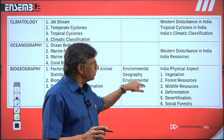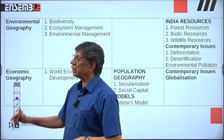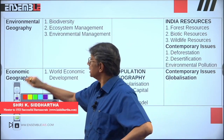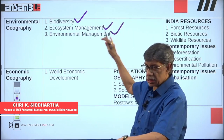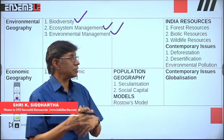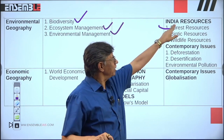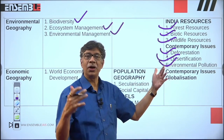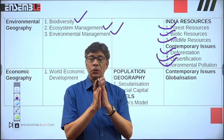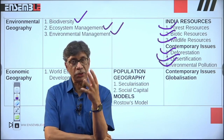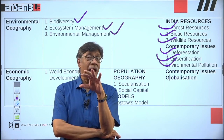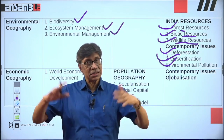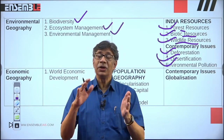Another cluster is in environmental geography. Topics like biodiversity, ecosystem management, and environmental management are interconnected — to manage biodiversity you must go for ecosystem management. In Indian geography, this connects to resources of India, biotic resources, wildlife resources, and in contemporary issues — deforestation, desertification, and environmental pollution are all correlated. When you go for environmental management you must know the problems: environmental pollution, desertification, deforestation. Whether it's an Indian context of wildlife, biotic, or forest resources — it's the same. Understanding this gives you a much greater depth of insight.